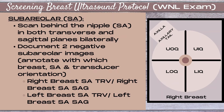Continuing with our screening breast ultrasound protocol for a normal exam — next I would move on to the subareolar region. This is annotated SA, and this is the tissue back behind the nipple. You want to scan it in both a transverse and a sagittal plane. When you've ensured there's nothing hiding back there, document two negative subareolar images annotated with which breast you're in, SA for subareolar, and your transducer orientation — for example, right breast SA transverse and right breast SA sagittal — then the same for the left breast.